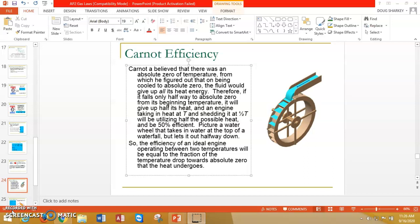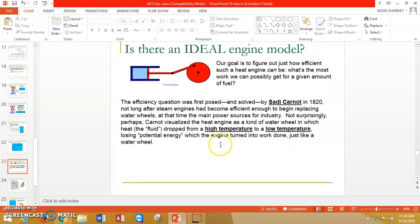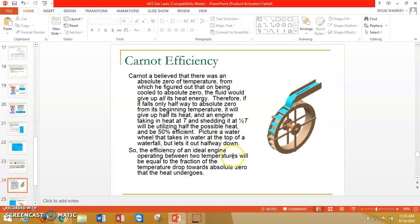So this guy, Carnot, figured out that if we have something called an ideal engine, and this is a purely theoretical exercise, right, we have this ideal engine, right, the efficiency of this thing operating between two temps will be equal to the fraction of the temperature drop towards absolute zero. So this is a theoretical idea that if you have some sort of ideal engine, we can calculate the efficiency. There's a lot of gobbledygook here, but just know that this is something that really isn't real world because there's no such thing as an ideal engine.